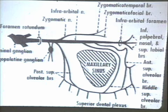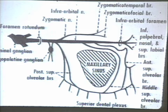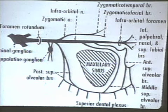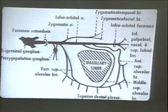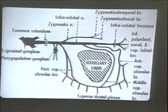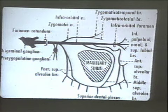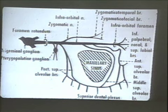Starting with the trigeminal system: it is divided into the ophthalmic, maxillary, and mandibular divisions. The trigeminal ganglion is located in the middle cranial fossa, giving rise to the maxillary nerve. The maxillary nerve can be divided into two portions. The posterior superior alveolar nerves come off in one position. As the nerve continues as the infraorbital nerve, it gives branches to the middle superior alveolar nerve and the anterior superior alveolar nerve, which blend to form the superior dental plexus.